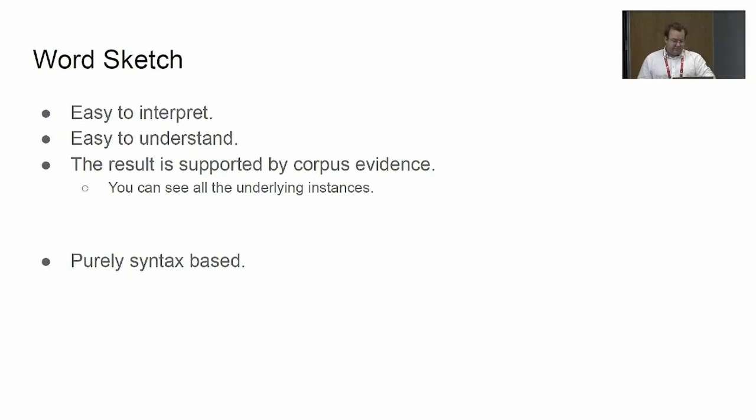So it's very fast and has many nice properties. It is very easy to interpret and understand. You can always see what the basis for the decision was; you can see all the instances of the collocates in the corpus and so on. But the drawback is that the word sketches are purely based on syntax, so it's difficult to see any semantic information, and that is what we want to deal with.